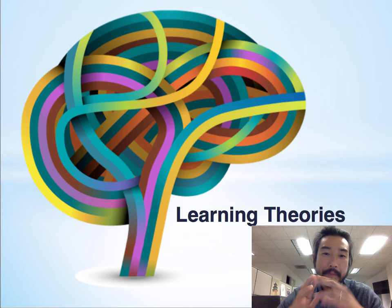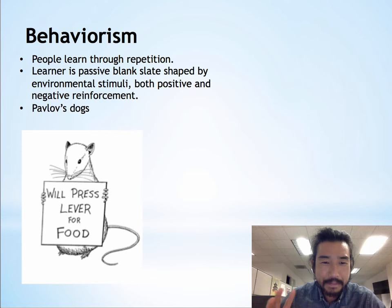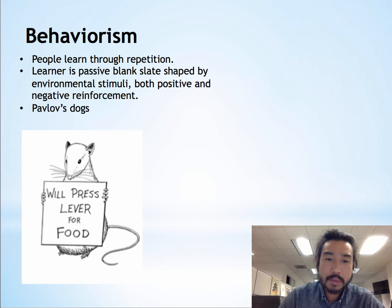All right, we're going to start with behaviorism. This is one of the oldest ones. It's really about the human being or the learner being a blank slate, and they are shaped by stimuli, both positive and negative. It's kind of like the rat who wants to get the piece of cheese and it pulls the lever — we have a little picture of that rat right there. And people learning through repetition — that's also one of the hallmarks of behaviorism.